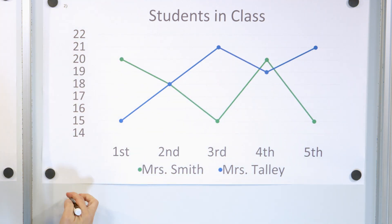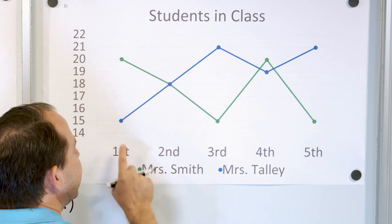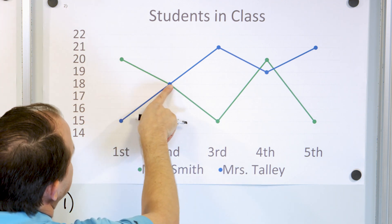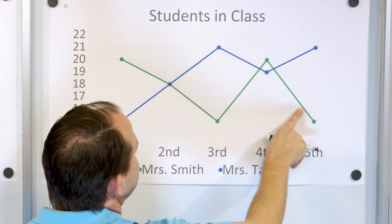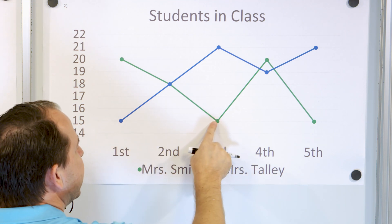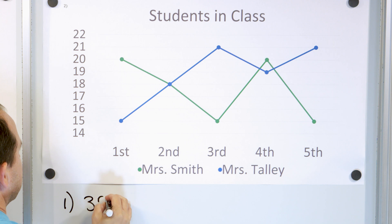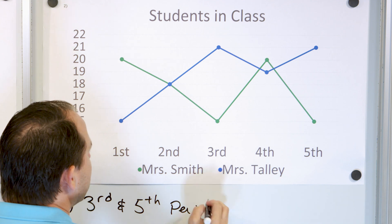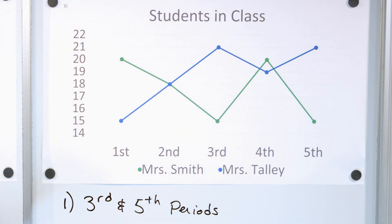So let's read question number one and try to answer the questions. During what period does Mrs. Smith have the fewest students? So when you're looking at Mrs. Smith, you only look at the green line. You ignore everything else. What period does she have the fewest students? Well, that's not the fewest. That's not the fewest. That looks to be the fewest. That's not, but these two were tied. You see, these are the exact same number, 15 students. So third period and fifth period. In other words, both of those periods are tied, but the fewest number of students for Mrs. Smith and the number of students in those periods is the lowest she has during the day, which is 15 students.